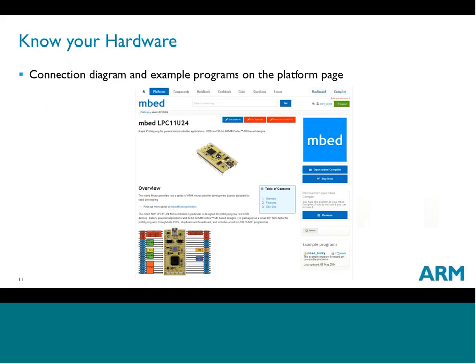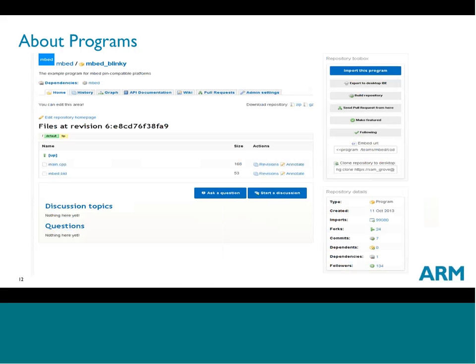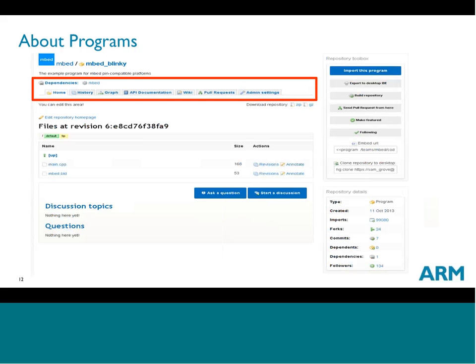The platform page has connection diagrams with friendly pin names you can use in your code, plus links to example programs you can import and compile to verify your hardware is up and running. When looking at a program, there are tabs across the top showing revision history, API documentation, and a wiki page covering how to use it or get started quickly. If you're the owner, you'll also see administration settings.